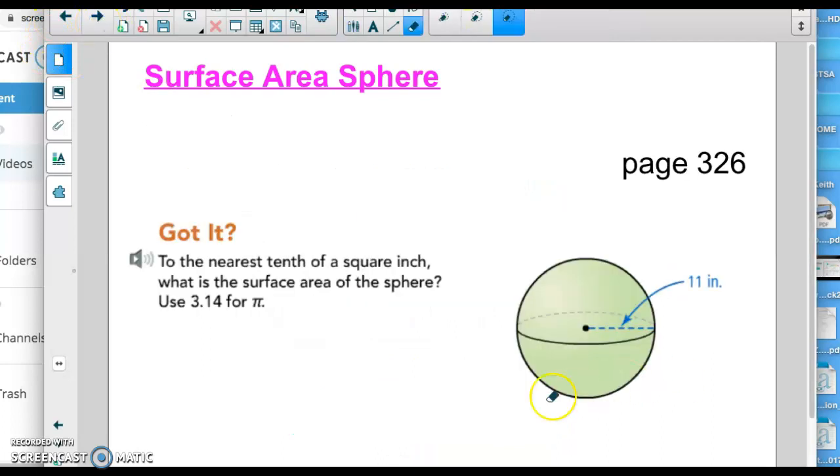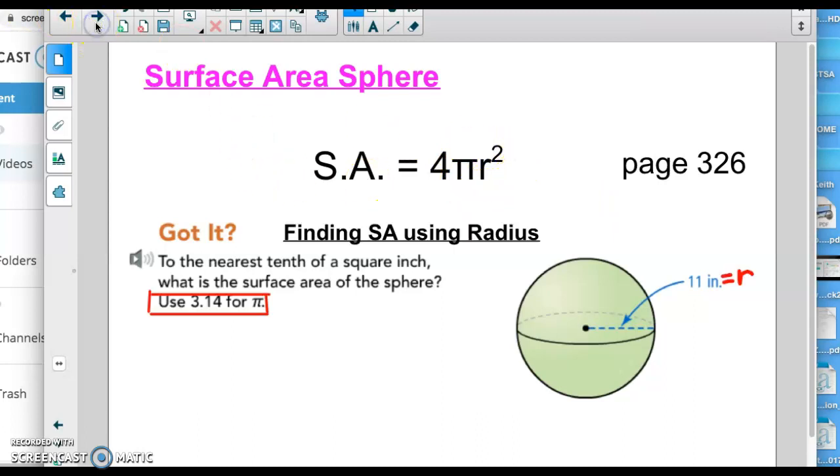So if we flip the page it says to the nearest tenth of a square inch what is the surface area of the sphere? Use 3.14 for π. So a couple things to point out here. One, what's our formula again? Oh yeah, it's 4πr². Two, we need to figure out what π and r² is for this situation. The problem says to use 3.14 for π. So instead of this π symbol we're going to use the numbers 3.14 and the radius is going to be 11 inches.